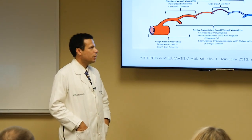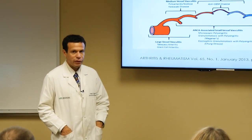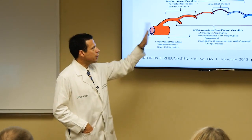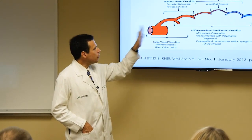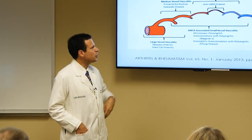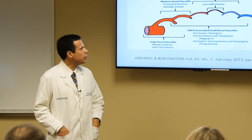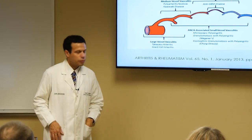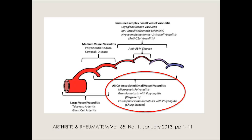Among the small vessel vasculitides, there are the less common immune complex-mediated ones, including cryoglobulinemia, IgA vasculitis, and those associated with low complement such as urticarial vasculitis. And finally, what we're going to focus on in this session: mostly the ANCA-associated small vessel vasculitis.